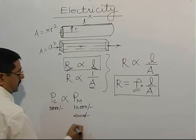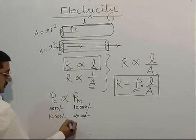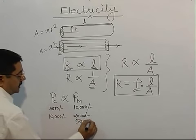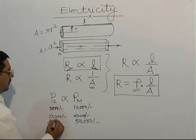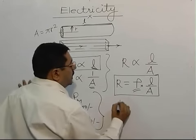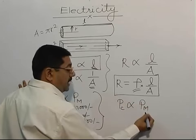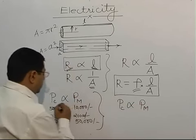Manager started getting 20,000 rupees, clerk's pay also became 10,000 rupees. When he gets 50,000 rupees, obviously clerk's pay will become 25,000 rupees. What is the relation between the two? The relation is pay of the clerk is proportional to pay of the manager.